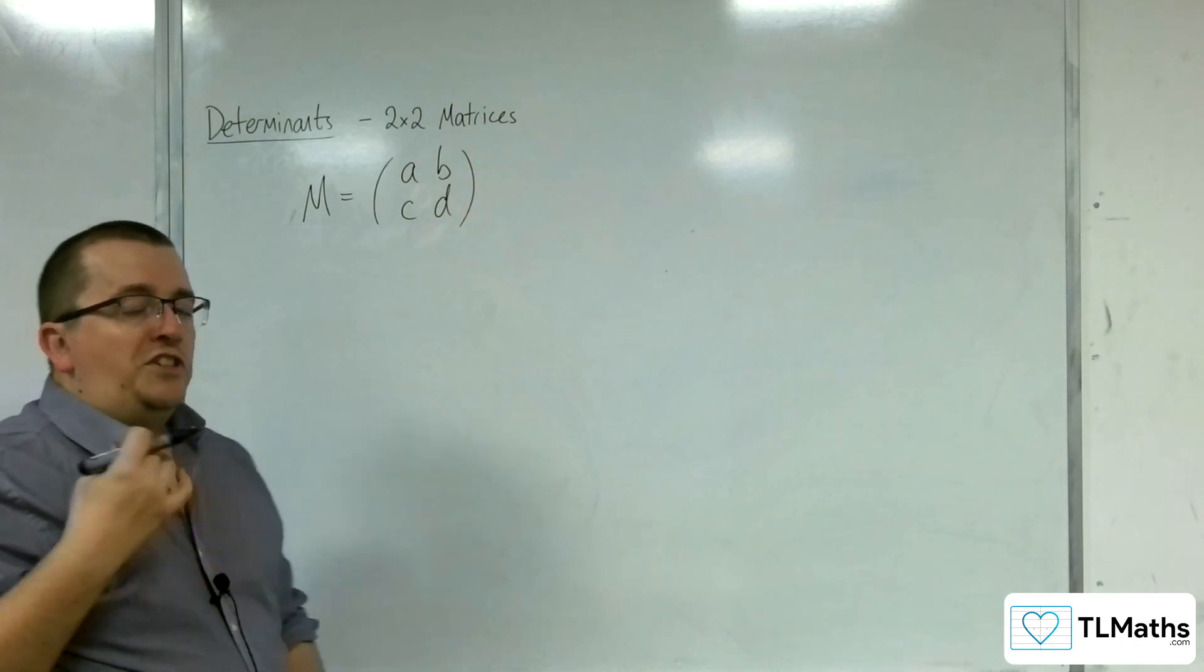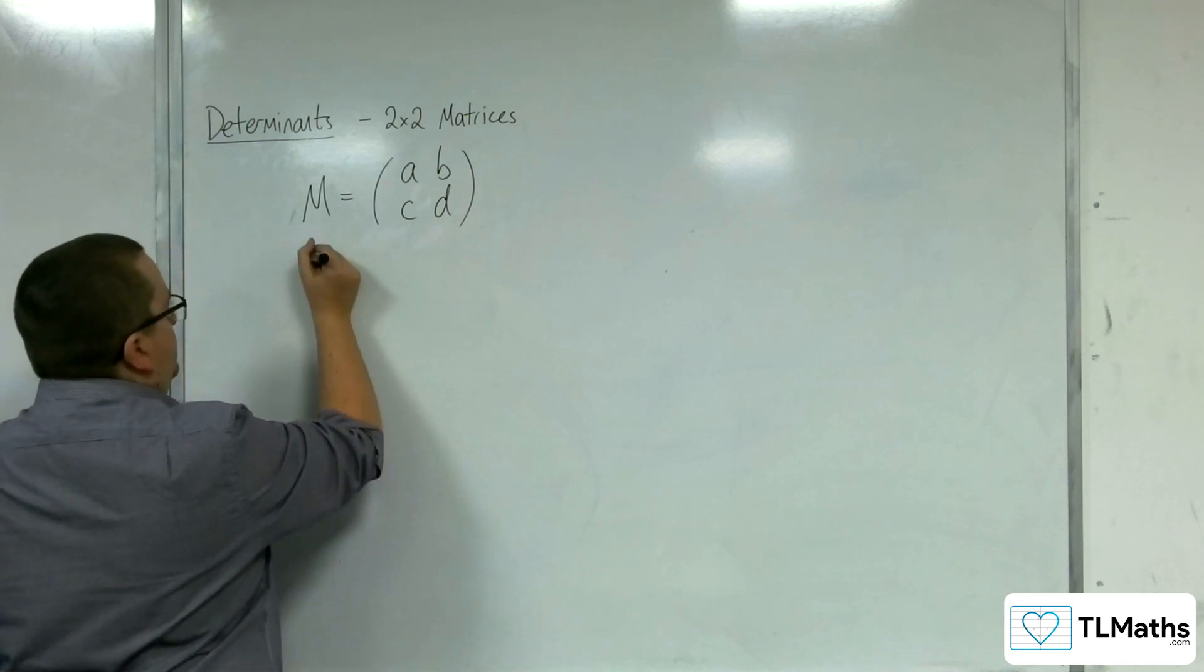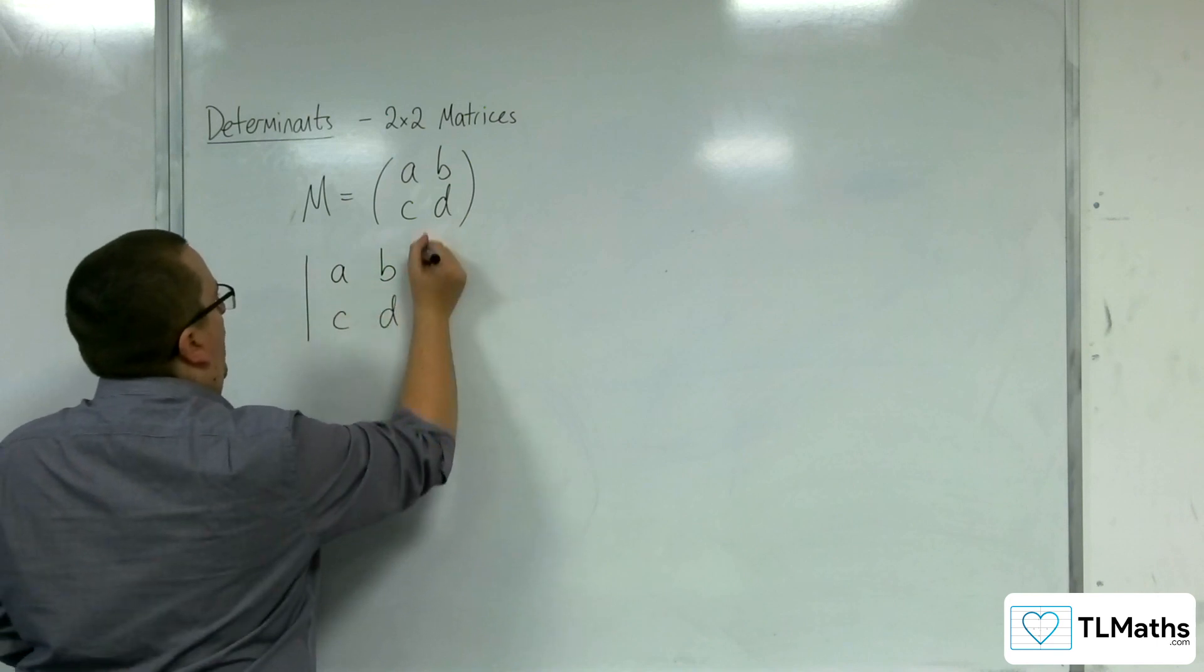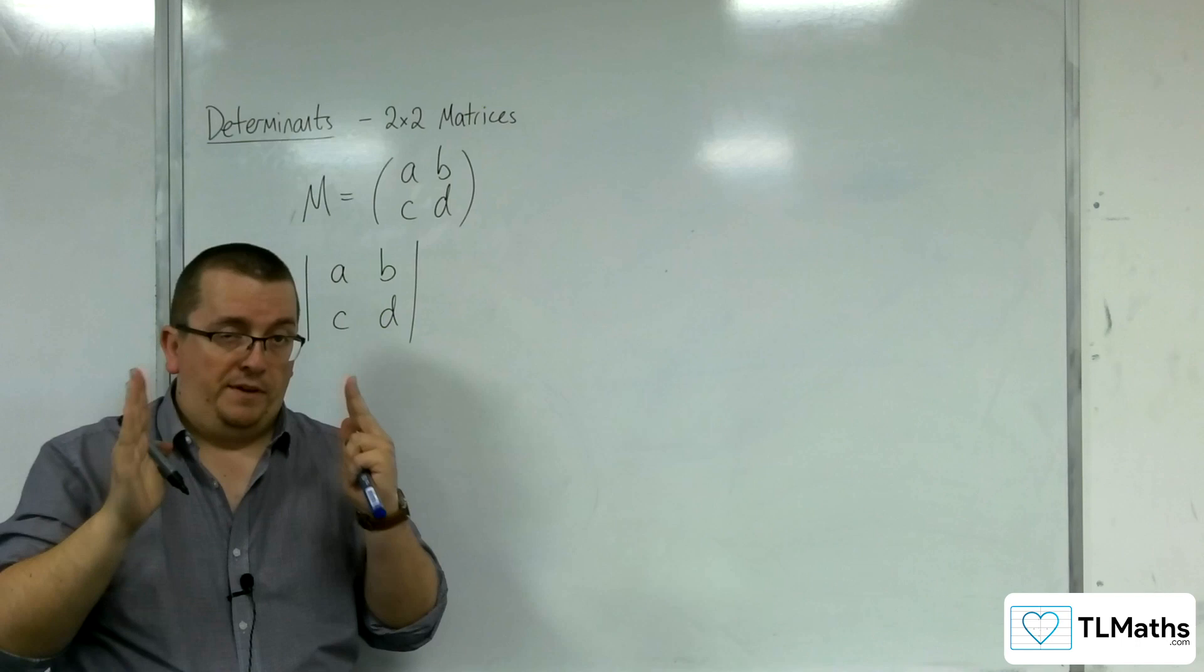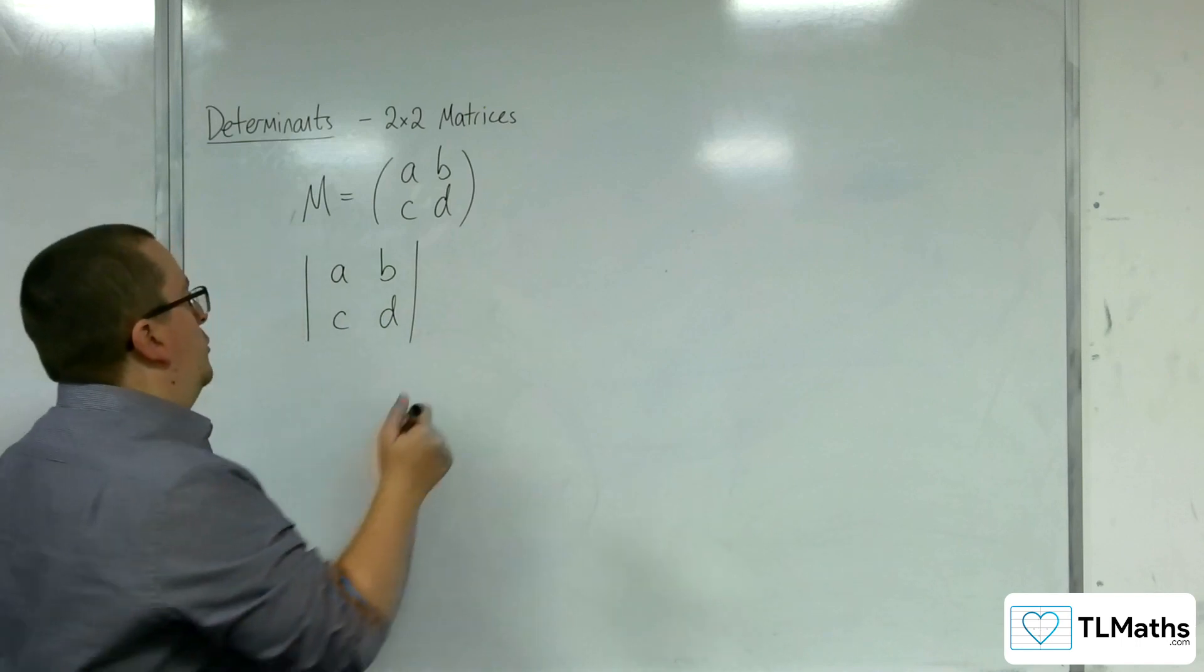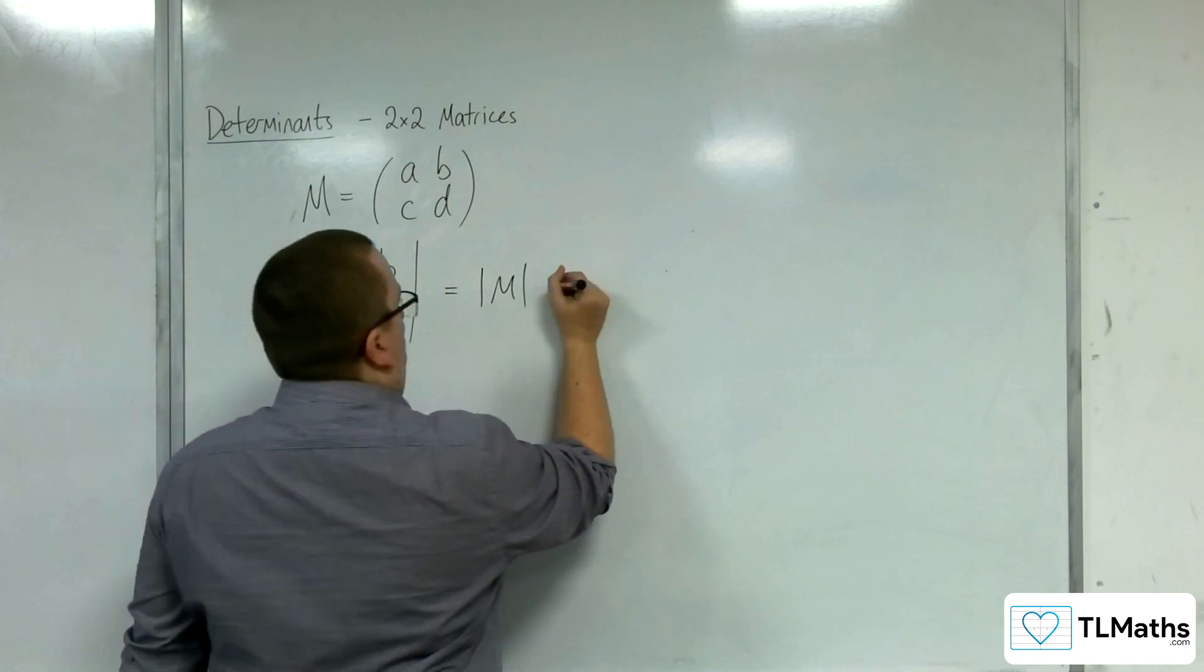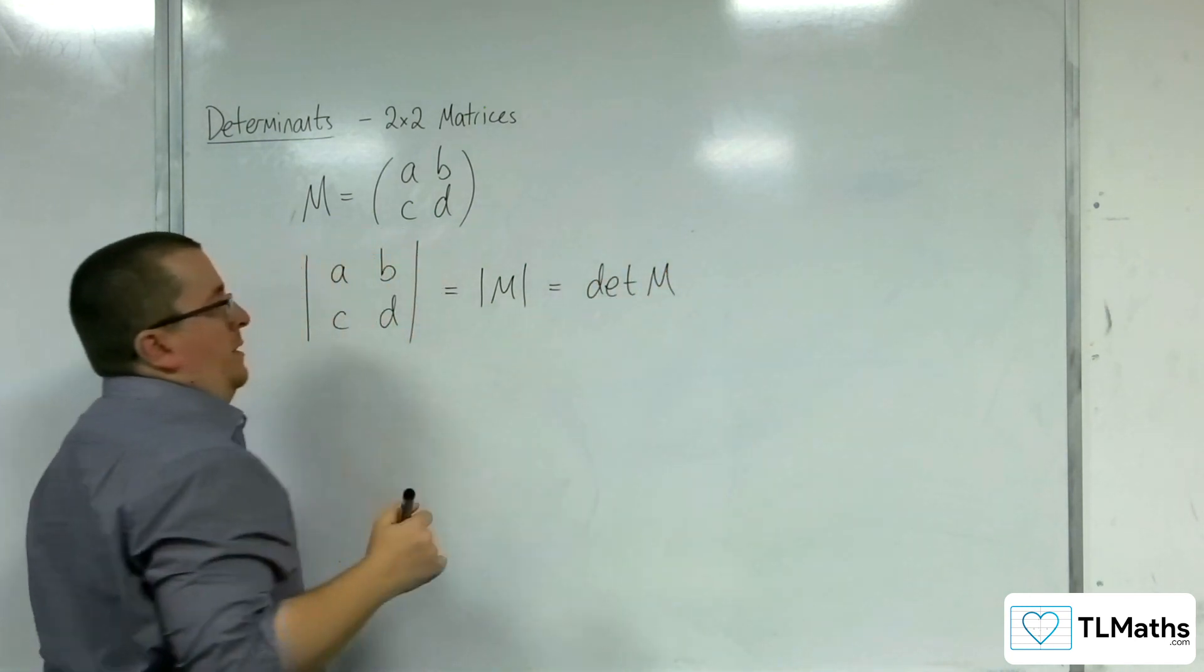Then the determinant of the matrix can be written in one of two ways. You can either write it as vertical lines being used either side of the matrix, or you could write det M to represent the determinant of the matrix.